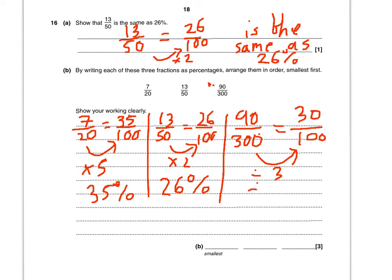That's 30%. So the smallest fraction is 13 over 50. The next smallest is 90 over 300. And the final one, the biggest one, is 7 over 20.